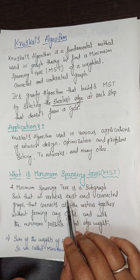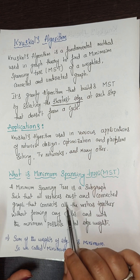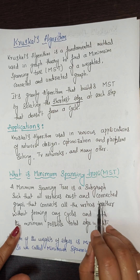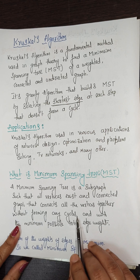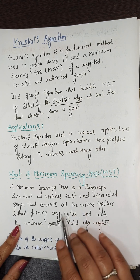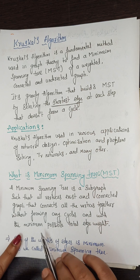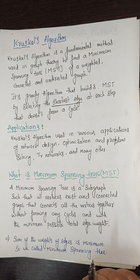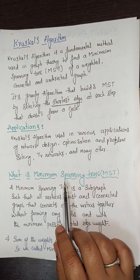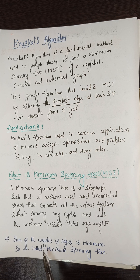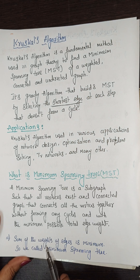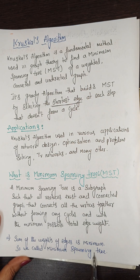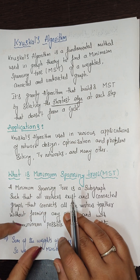The MST connects all the vertices together without forming any cycle. We select edges with the minimum possible total weight. The reason we call it a minimum spanning tree is that the sum of the weights of the selected edges is minimum. The name itself tells us: the sum of the weights of the edges is minimum, so it is called a minimum spanning tree.